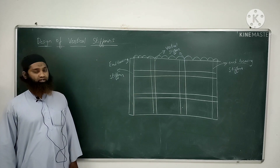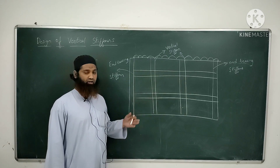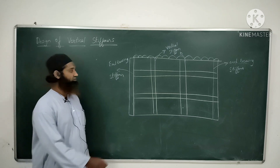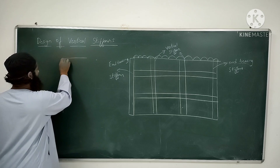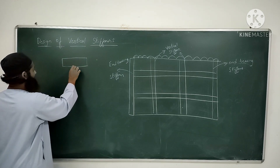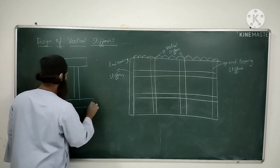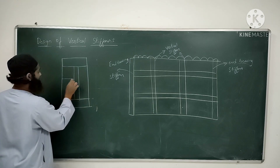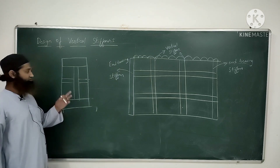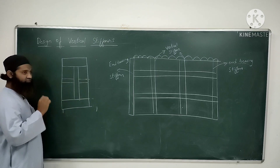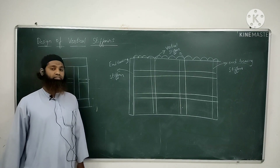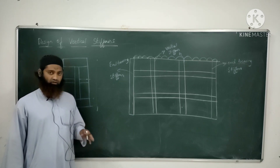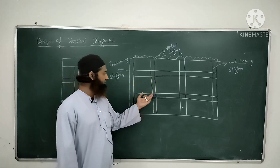Today we will be seeing how the design of the vertical stiffener will take place. These vertical stiffeners may be provided, depending on the situation and need, on one side of the plate girder or on both sides of the plate girder. This is the front view you are seeing. Basically, the plate girder will look like an eye section. Your intermediate vertical stiffener, whatever you are providing, will come a little bit outside. Today we will be seeing the design of the vertical stiffener and the steps involved.